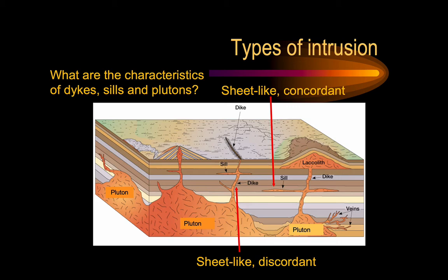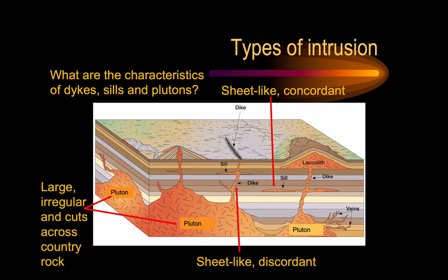The final type of intrusion is plutons. Plutons are large and irregular — they're crystallized magma chambers, and they cut across the country rock. It's their size and irregularity of shape that makes them plutons. Plutons can range in size from maybe several hundred meters across up to tens of kilometers across.